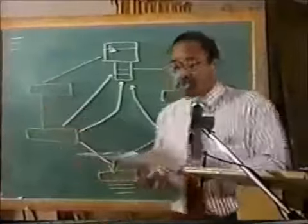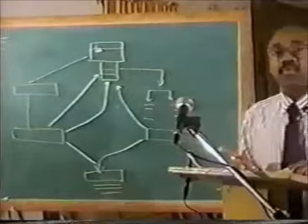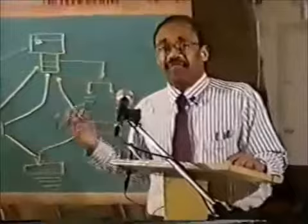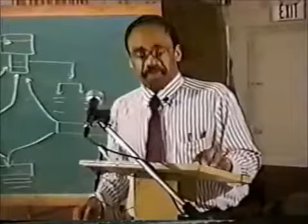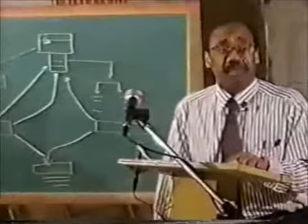Number one is colonialism. In order for you to understand what is happening to you, or the so-called world economic order today, we've got to go back at least 500 years, minimum. In that 500 years, we're going to deal with colonialism. We put an arbitrary date of 1500 to 1945, and that's labeled number one.